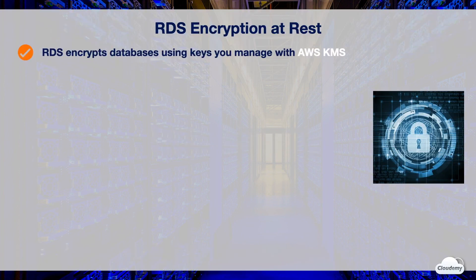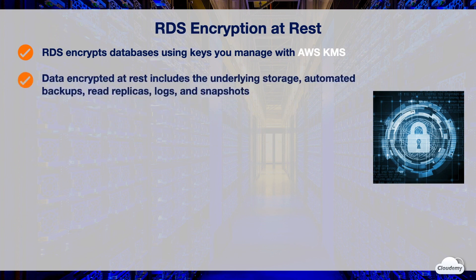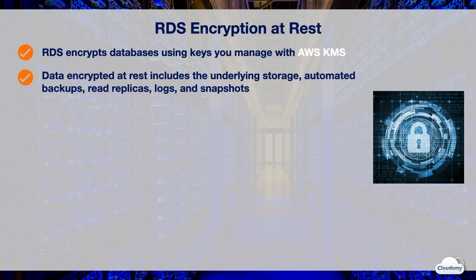RDS encrypts your databases using keys you manage with AWS Key Management Service or KMS. Data that is encrypted at REST includes the underlying storage for DB instances, automated backups, read replicas, all logs, and snapshots.